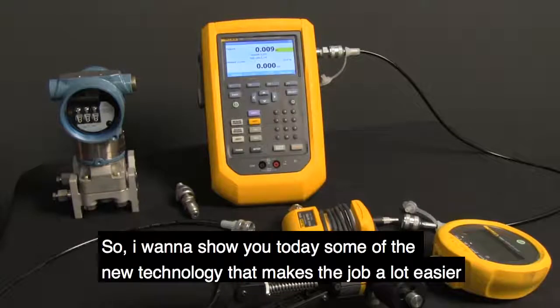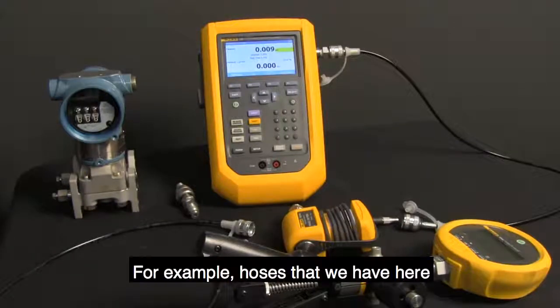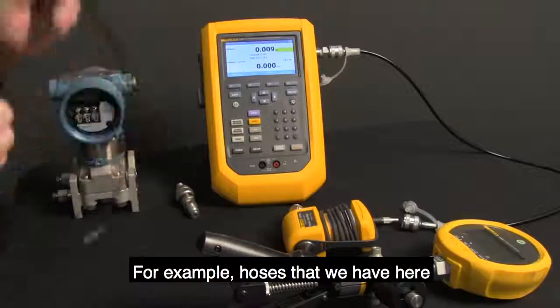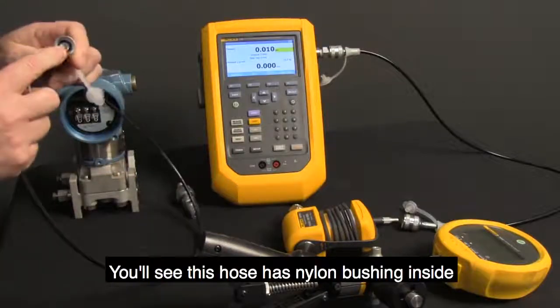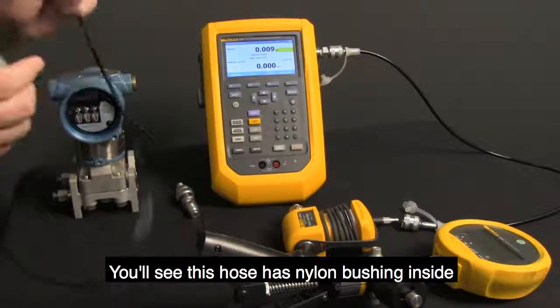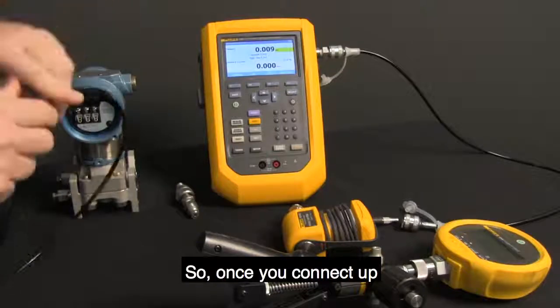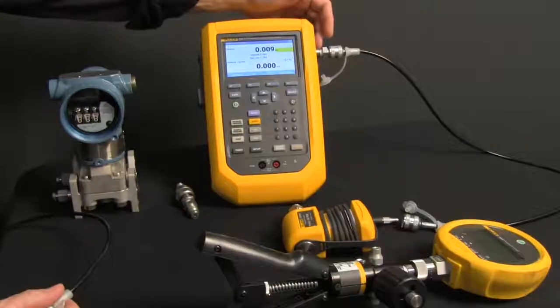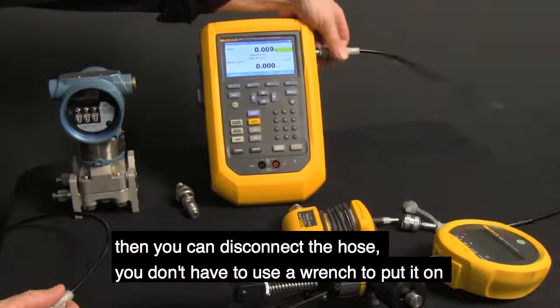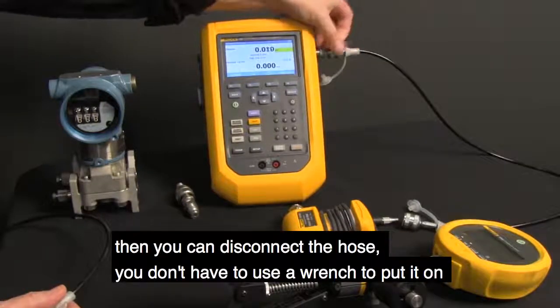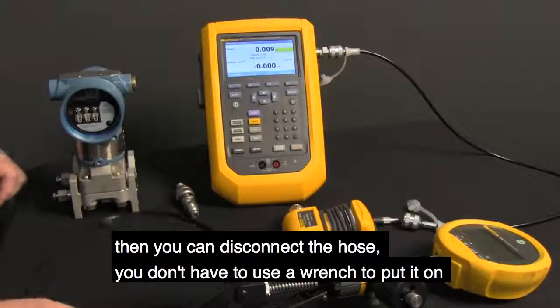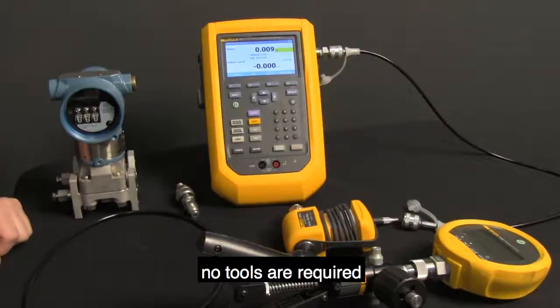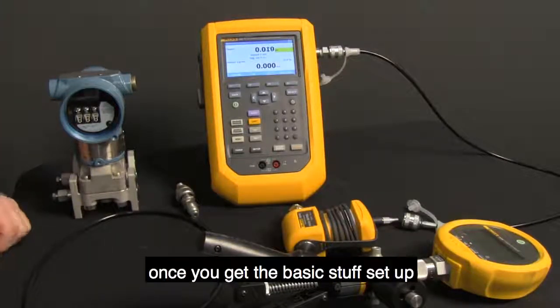I want to show you today some of the new technology that makes the job a lot easier. For example, hoses we have here - you'll see this hose has a nylon bushing inside. Once you connect up the connector with the thread seal tape to the calibrator, you can just disconnect the hose. You don't have to use a wrench to put it on. No tools required once you get the basic stuff set up.